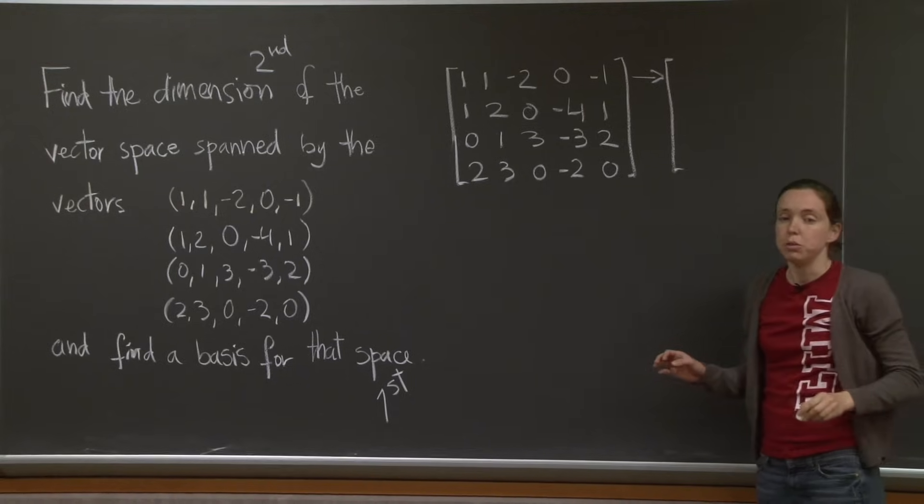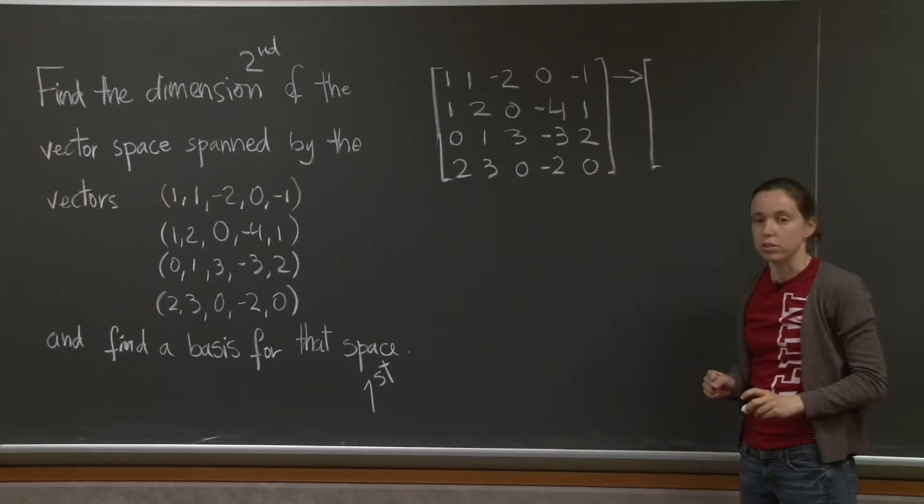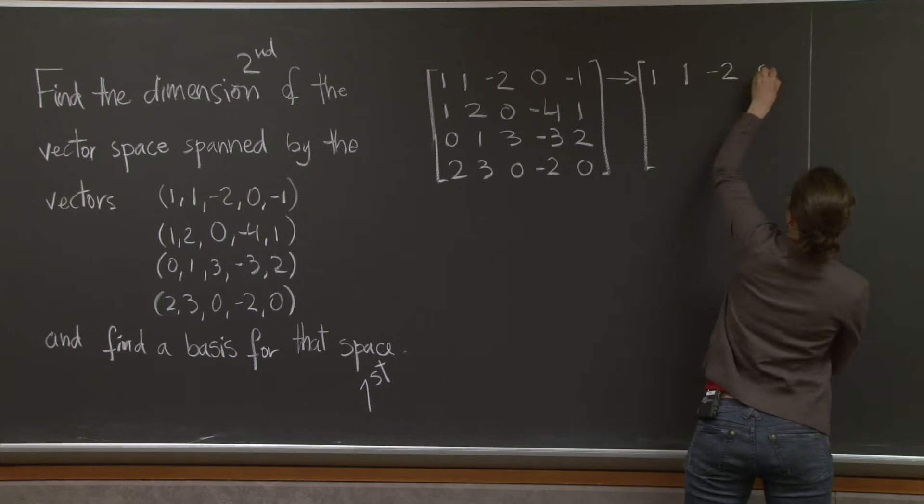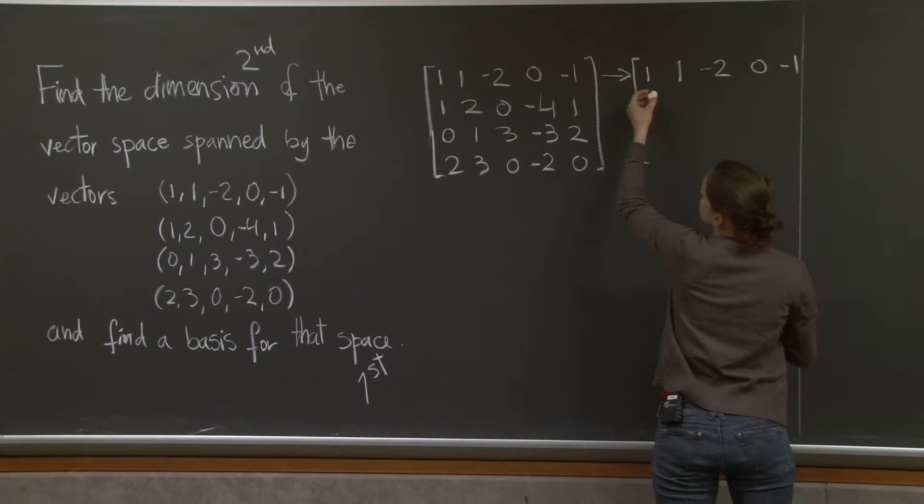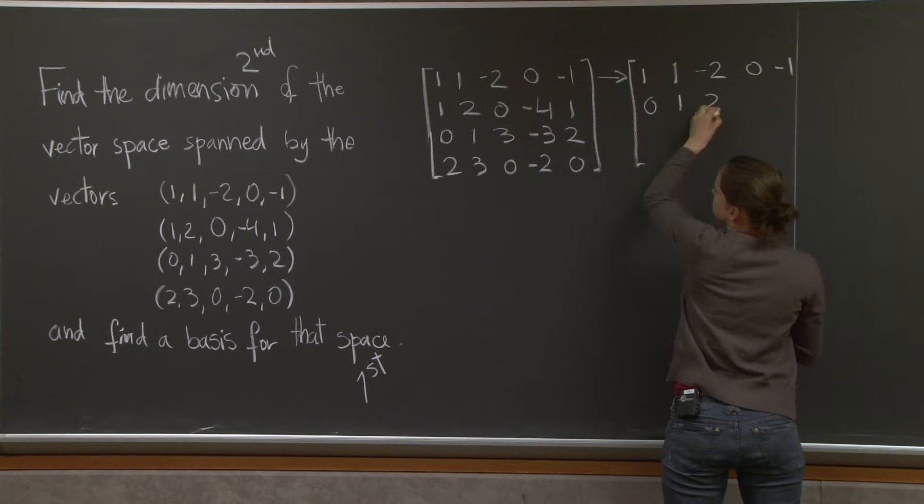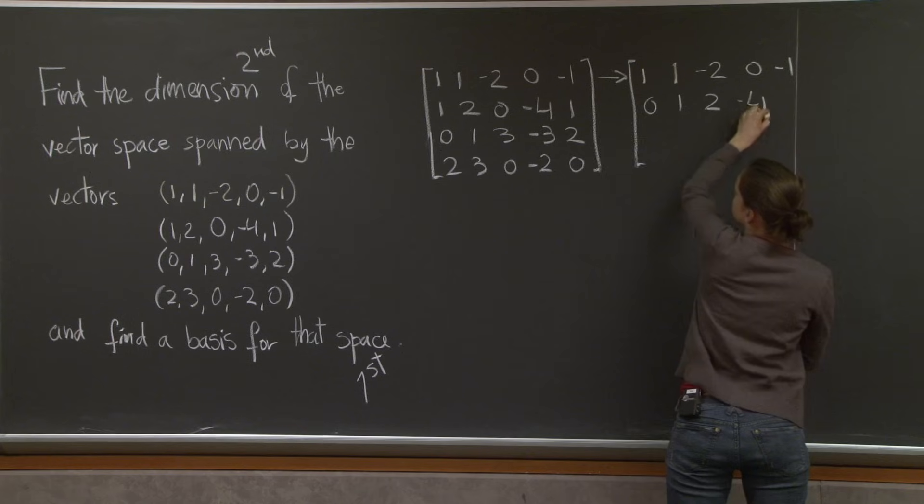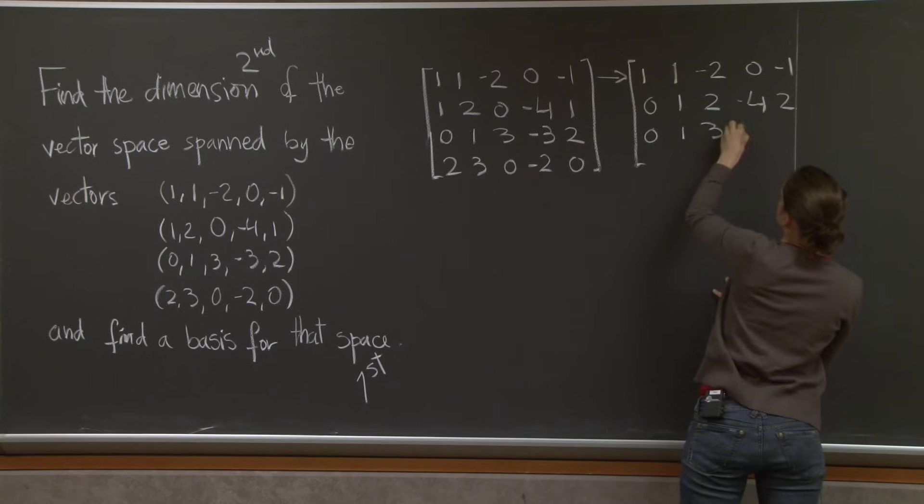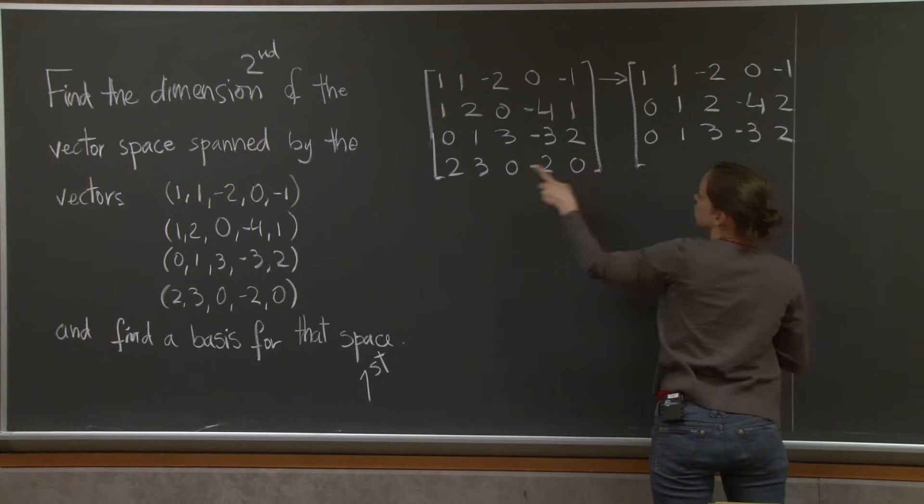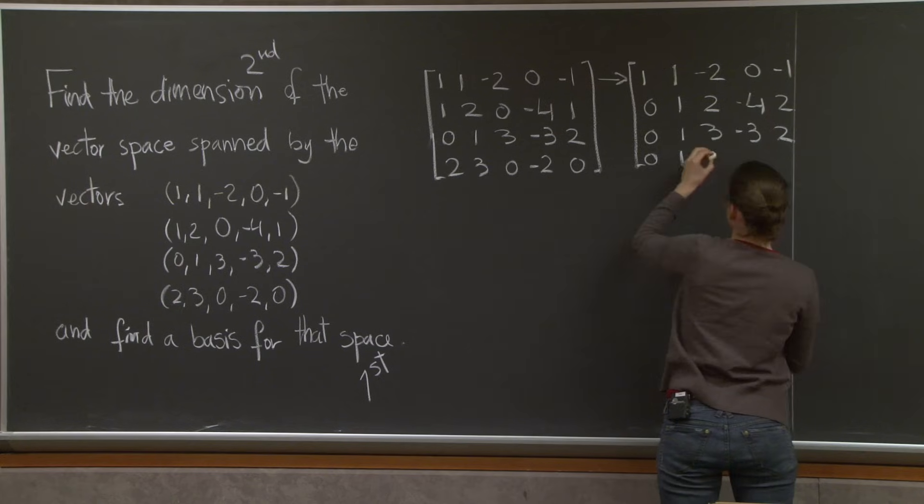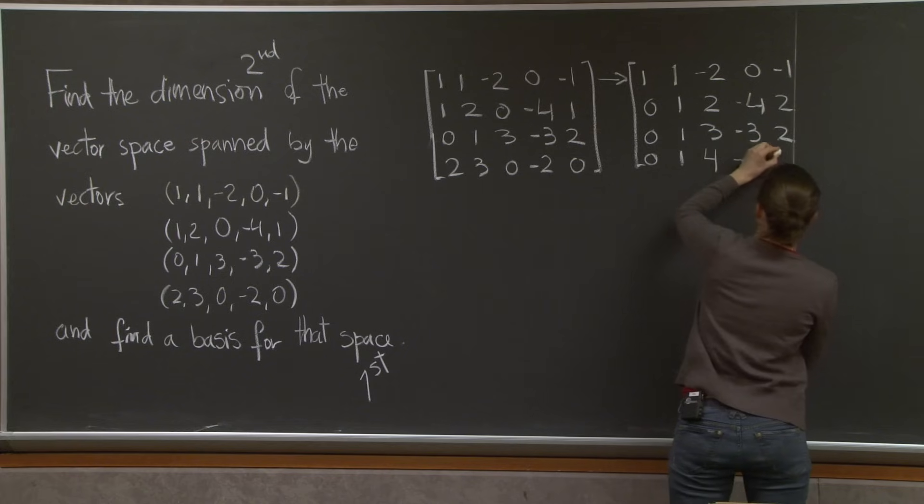All right, by now you must have done elimination a million times, so I'll go a little bit faster. 1, 1, minus 2, minus 1, 0, 1, 0, plus 2, minus 4, 2. This one is already done. 1, 3, minus 3, 2, 2, 2, minus 2, 3, minus 2, 0, plus 4, minus 2, and 2.